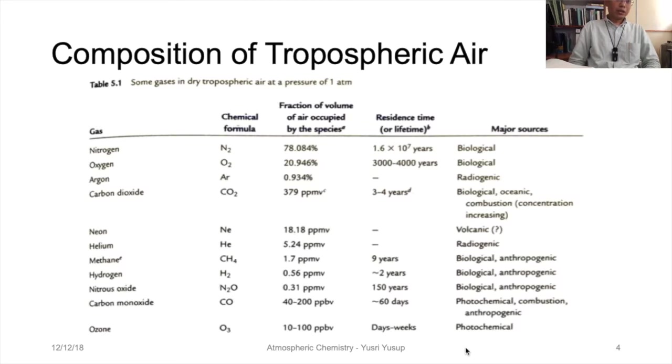Then there's carbon dioxide, a very small amount compared to nitrogen, oxygen, and argon, at 379 ppm, although right now it's about 400 ppm or more, maybe 430 or 440 ppm. The residence time is about 100 times lower than nitrogen and oxygen.